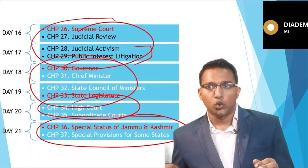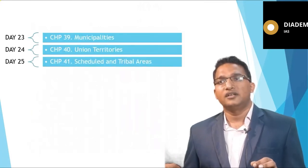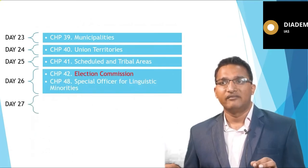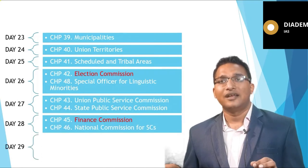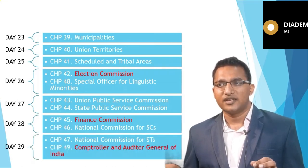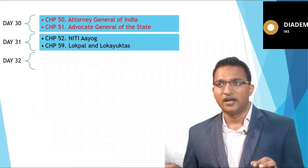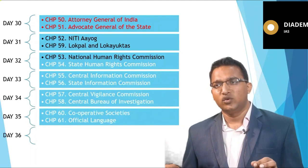Day 7 covers emergency provisions. Day 8 covers parliamentary system and federal system — important for mains. Day 9 covers central-state relations — important for mains. Day 10 covers interstate relations. Then president and vice president, parliament, cabinet committees, parliamentary committees, parliamentary forums and groups. President, vice president, parliament, and parliamentary committees are important for prelims. Then Supreme Court and judicial review, judicial activism and public interest litigation — important for mains. Then governor and chief minister, state council of ministers, state legislature, high court, and subordinate courts.